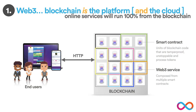In this diagram, we've got a blockchain hosting a bunch of smart contracts. And what we feel very strongly at DFINITY is that in Web3, blockchain is the platform and it is the cloud. We're going to see online services running 100% from the blockchain. You can see those canister-shaped things — smart contracts — which are units of blockchain code that are tamper-proof, unstoppable and process tokens. The colored lines show how those smart contracts are being composed and combined together to create Web3 services.